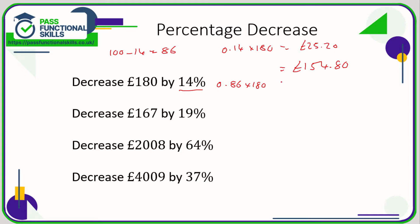The multiplier for 86% is 0.86, and 0.86 multiplied by 180 is 154 pounds 80. So this is where things can be a little confusing: the multiplier for 14% is 0.14; if you're increasing by 14% it's 1.14; but if you're decreasing by 14% the multiplier is 0.86. If you're struggling to understand why, remember: when something reduces by 14% you're just paying 86% of the original amount.